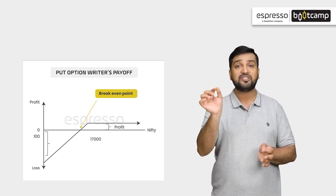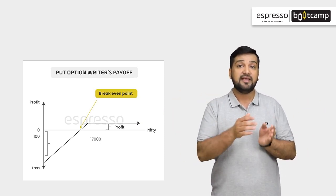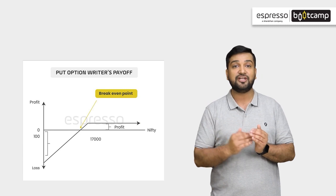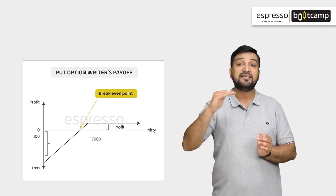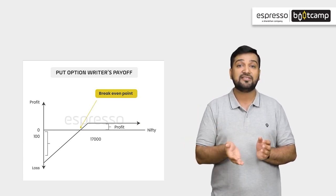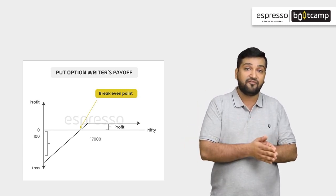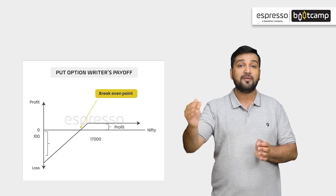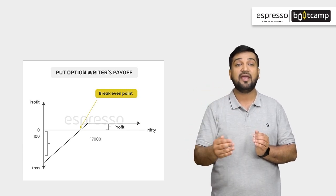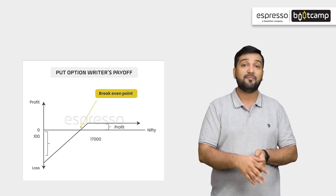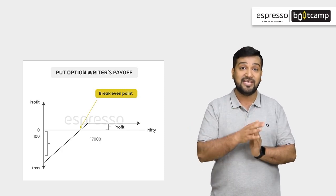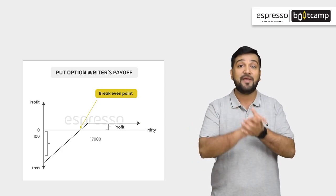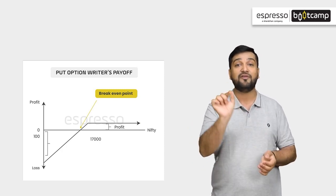Agar nifty expiry ke din sell kiya strike price se niche trade karta hai, toh the seller starts incurring losses. Aur agar nifty strike price ke oopar trade karta hai, toh the seller makes profit. Always remember that theta is the biggest friend of an option seller.